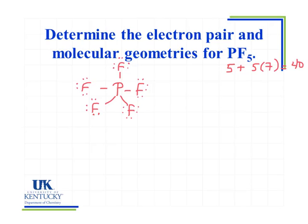So what I see is I've now used up all 40 of my electrons, therefore I don't have any additional electrons to go on that central atom.